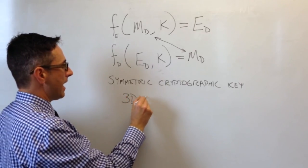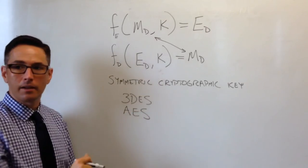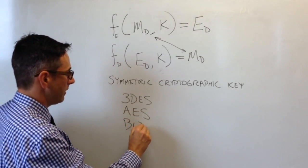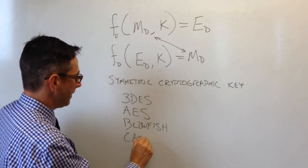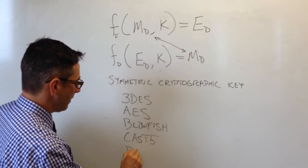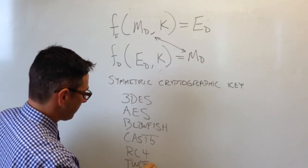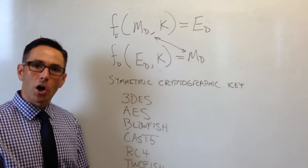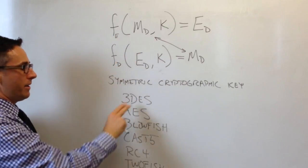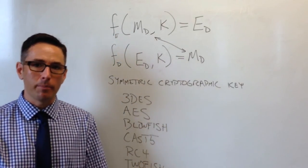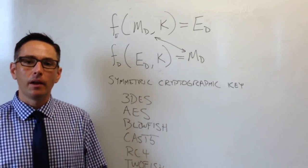Some examples of cryptographic algorithms that you can use as this function go by the names such as 3DES, AES, Blowfish, CAST5, RC4, and 2Fish. These are all examples of different functions, different algorithms that you can use that have this property. They're designed by different people who have different concerns about the process and the way in which this is done.